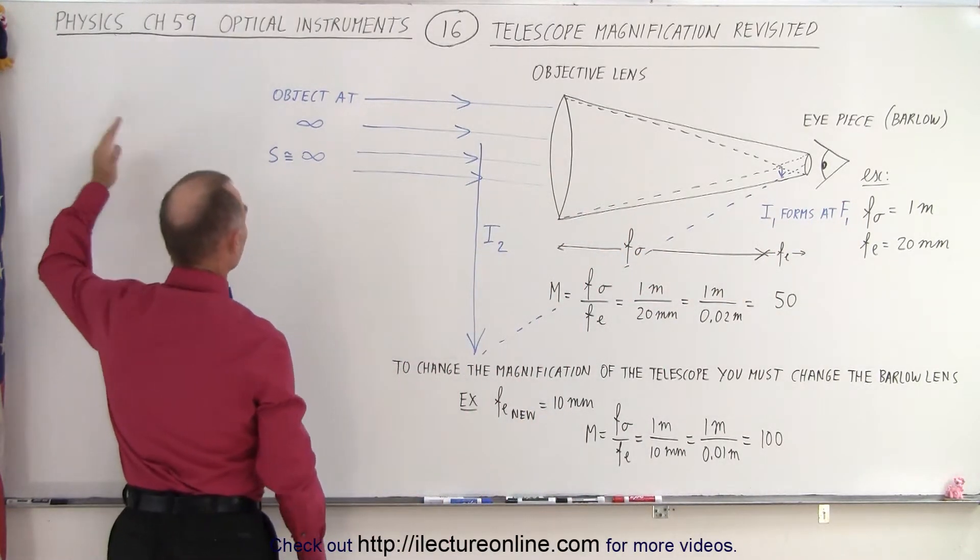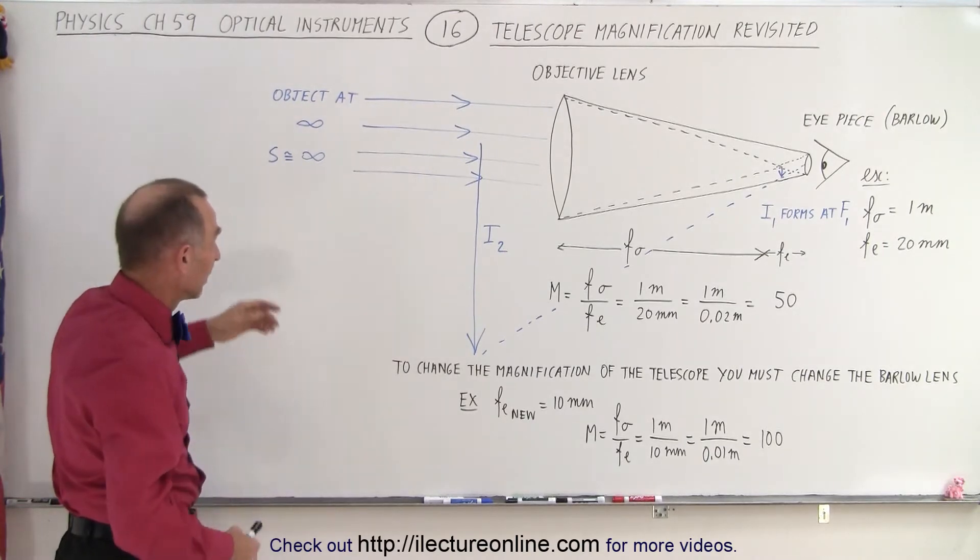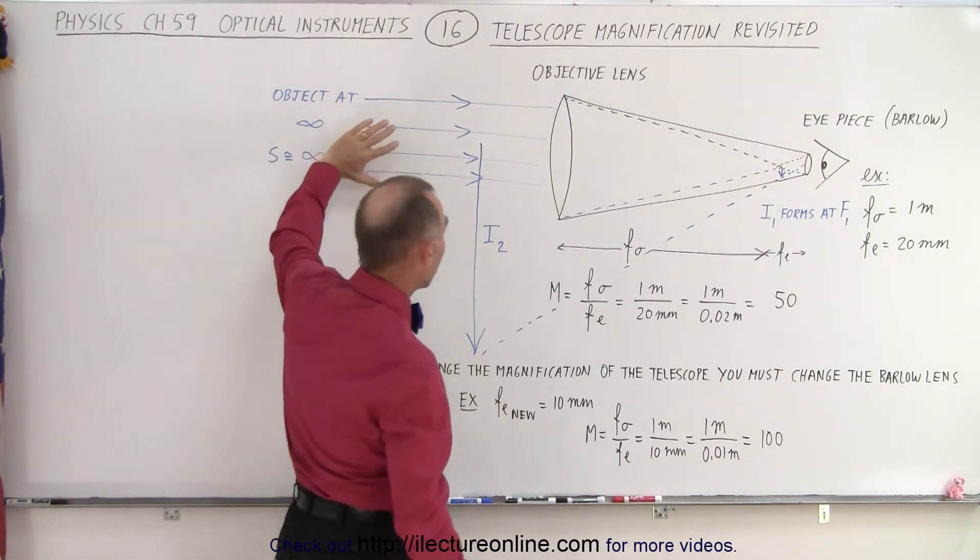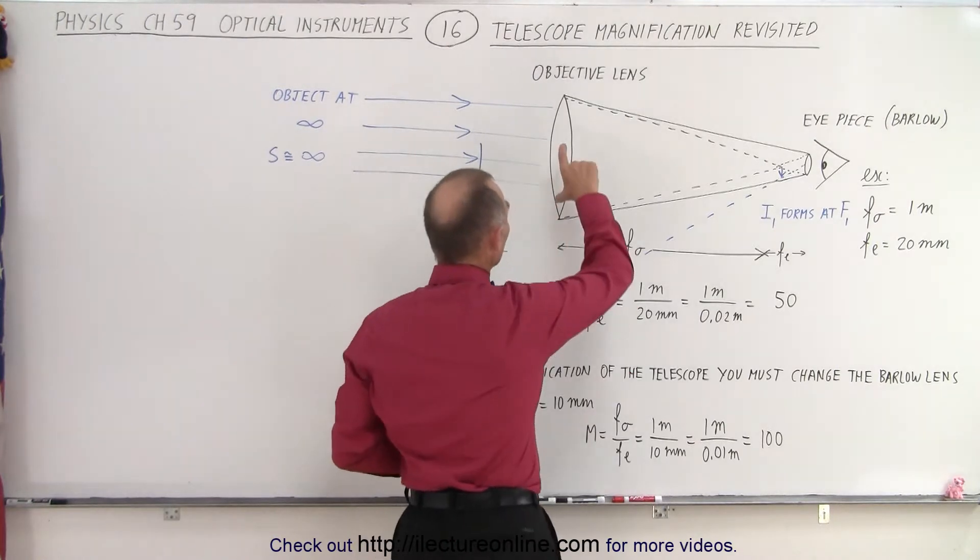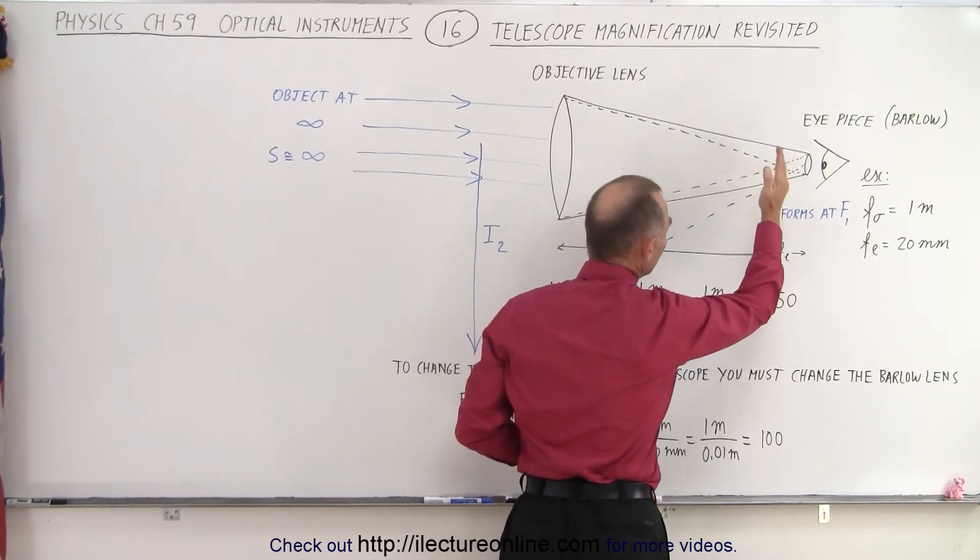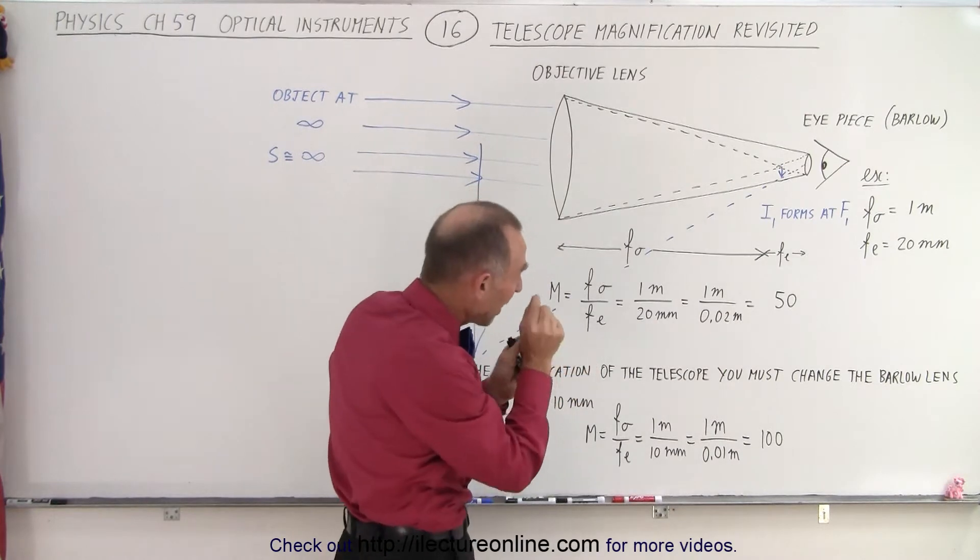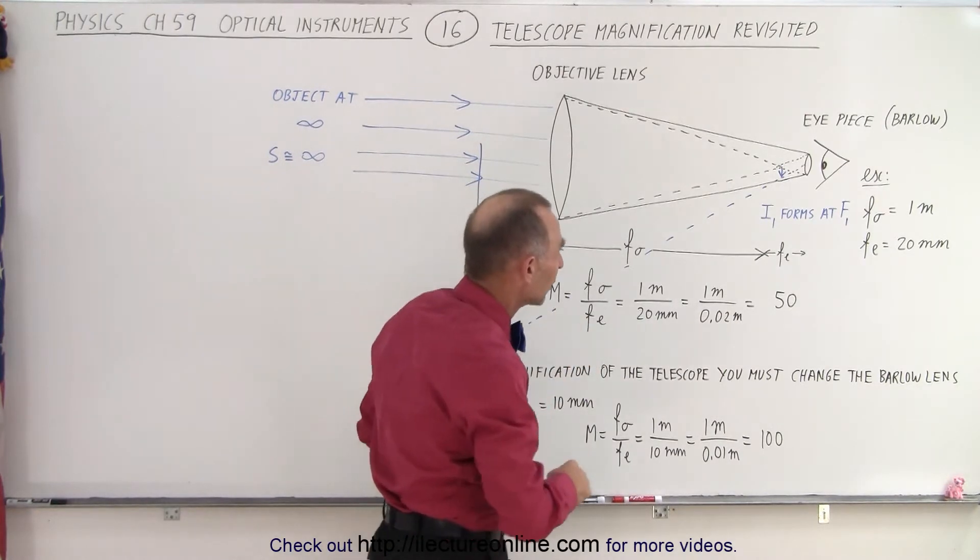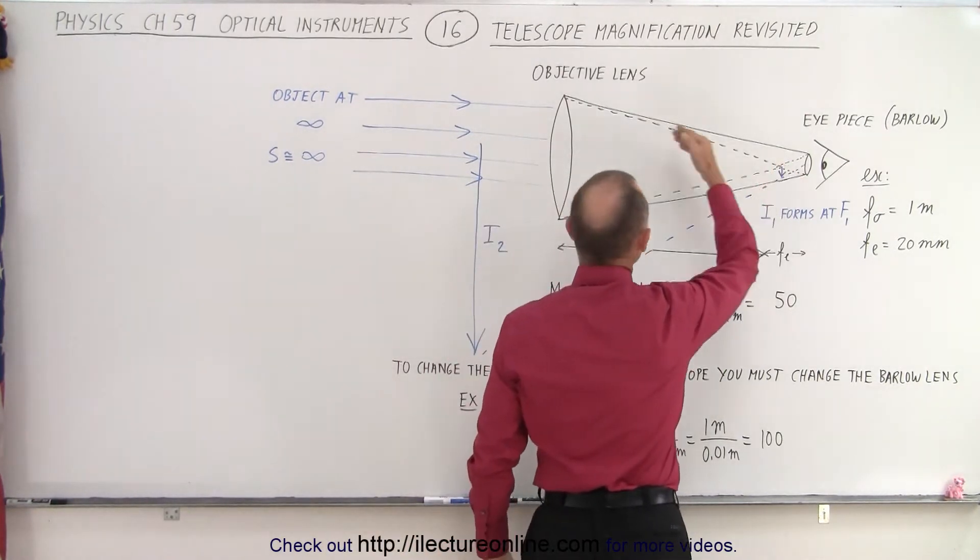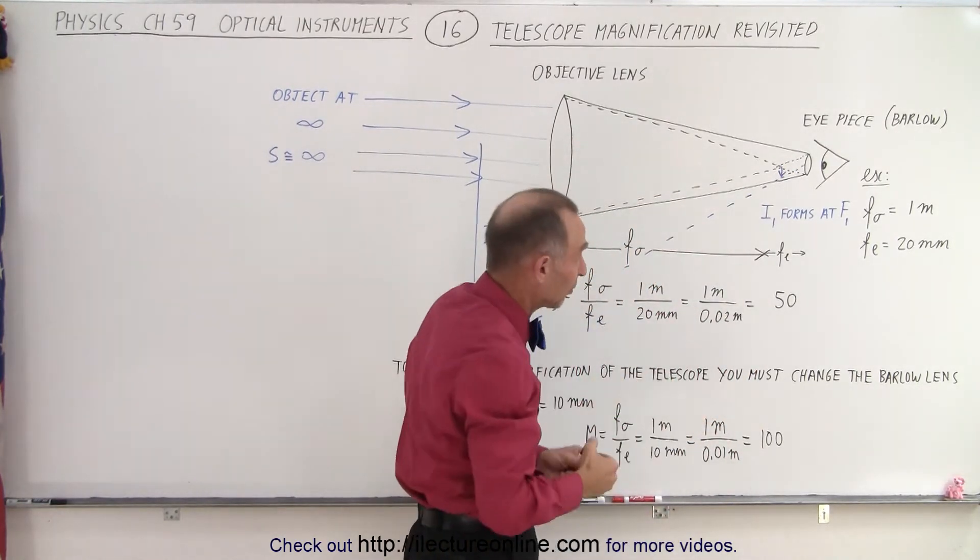You have an object very far away, essentially an infinite distance away. The light comes in parallel to one another, it goes through the objective and the objective converges that light onto an image which is just about at the end, just past the focal point of the objective lens. Essentially it's at the focal point of the objective lens.